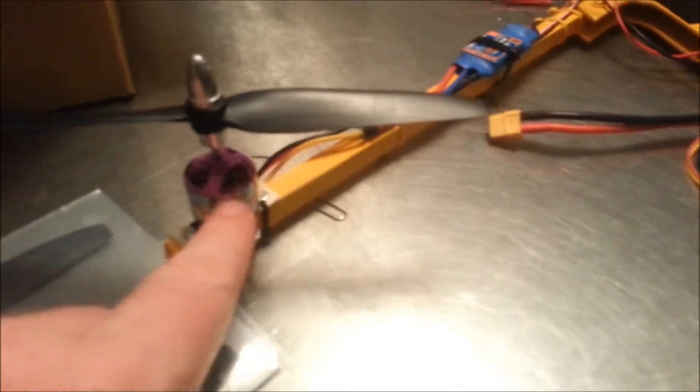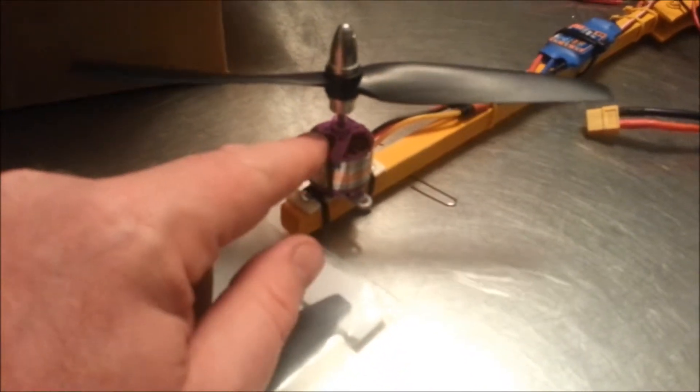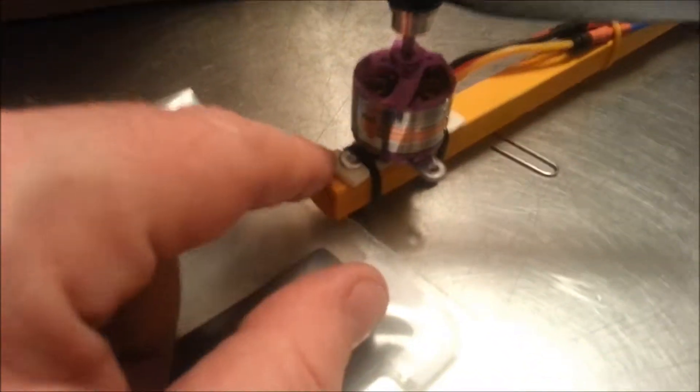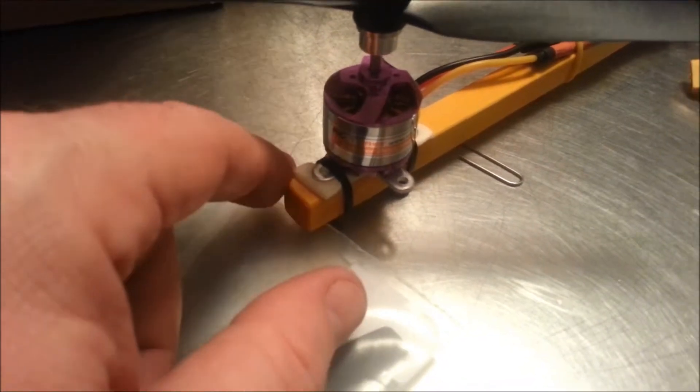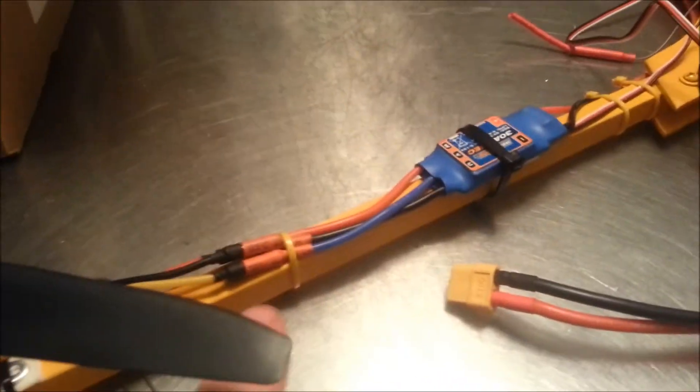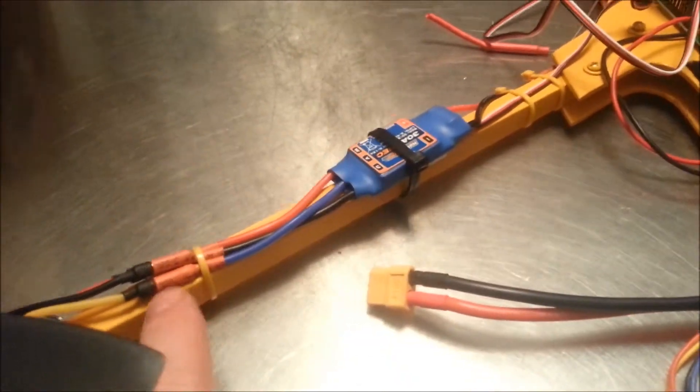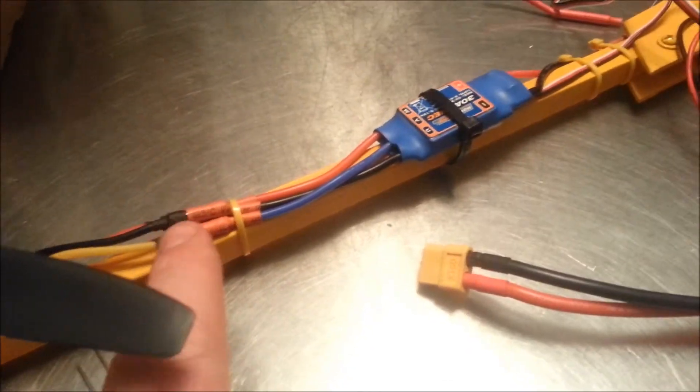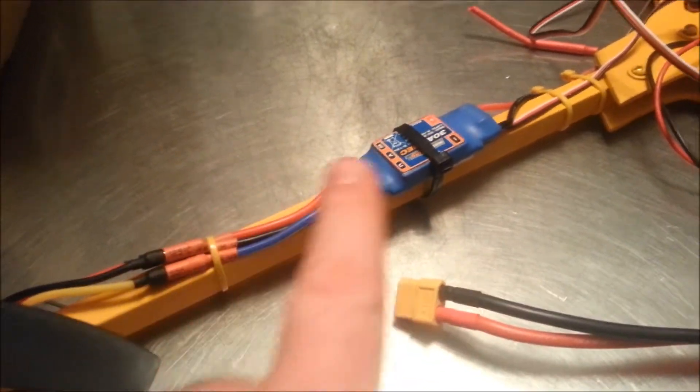I'll show you a quick rundown. It has the RC timer motors and I use the double sided foam tape with the zip ties like he recommended. They're joined together with some of the gold bullets, the motors to the speed controllers.